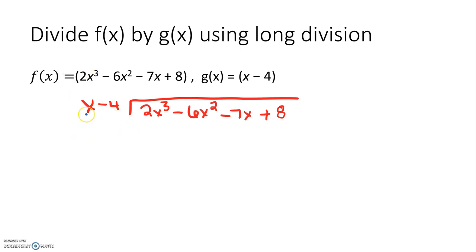To divide, we only look at the first term of the divisor and the first term of the dividend. What times X would give me 2X cubed? Well, that would be 2X squared. Now I multiply 2X squared times both terms. 2X squared times X gives me 2X cubed. 2X squared times negative 4 gives me negative 8X squared.